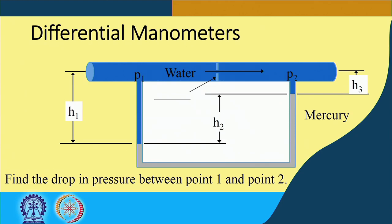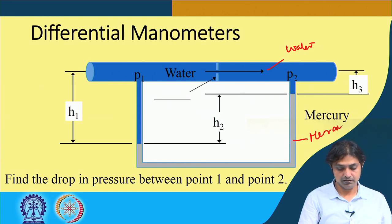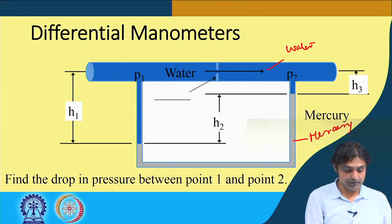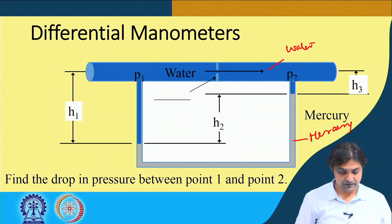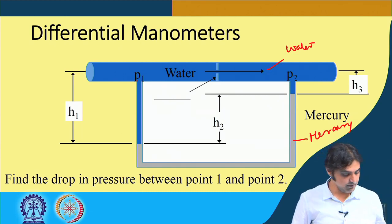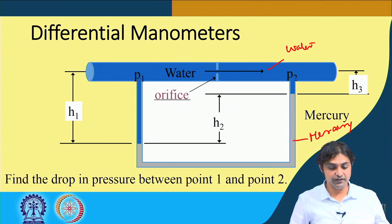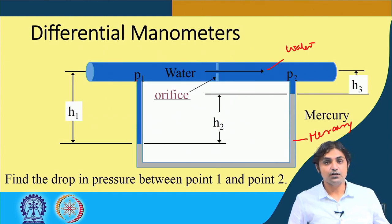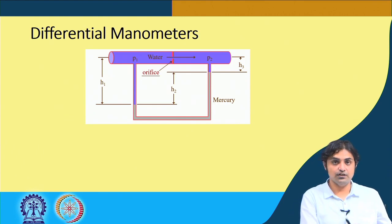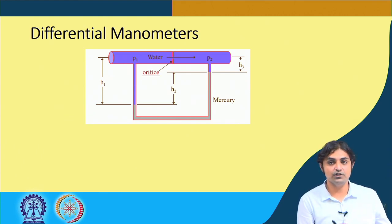We are going to write down an equation — you can call it a numerical as well. The blue liquid is water and the other is mercury. We need to find out the drop in pressure between points 1 and 2. This is an orifice setup, and we are going to write down the pressure variation equations.